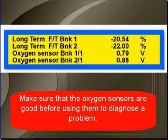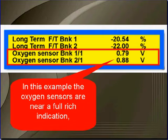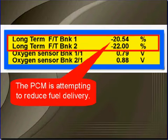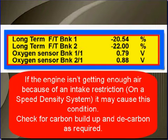Make sure that the oxygen sensors are good before using them to diagnose any problem. In this example, the oxygen sensors are near full rich indication. The PCM is attempting to reduce fuel delivery. We have a rich condition — we either have too much fuel or not enough air.